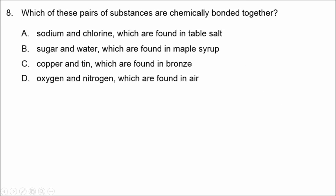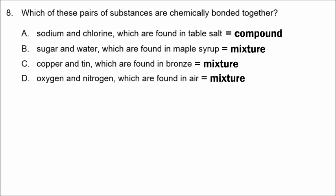In number eight, we have to decide which pair of substances are chemically bonded together — we're looking for a compound. Table salt is a compound, so that looks like the correct answer. Maple syrup is a mixture, bronze is a mixture, and air is a mixture. The correct answer is A, because sodium and chlorine are bonded together to form the compound table salt.